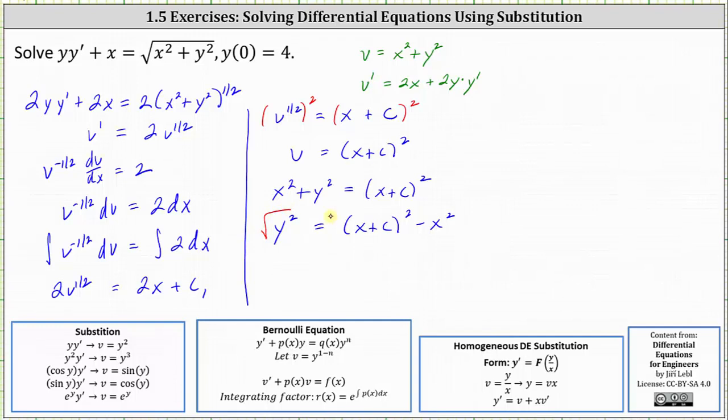Algebraically we do have a plus or minus on the right. This gives us y equals plus or minus the square root of the difference of the square of x plus c and x squared.